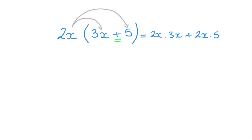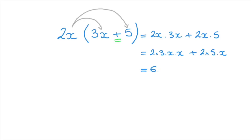An important thing to remember is that multiplication is commutative — meaning we can change the order of the terms in any multiplication. So we can rewrite this as 2 times 3 times x times x, plus 2 times 5 times x. Simplifying, 2 times 3 is 6, and x times x is x squared.